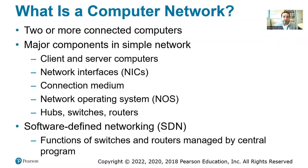The major components of a simple network include client-server computers, which we discussed in previous lectures. A client here refers to a computer — it can be a desktop or laptop — that is connected to a server. It can be one client or multiple clients. An example is a POS or point-of-sale desktop computer connected to a server stored in the back of a small office or building. Another component is the network interface, which you should call NICs. This can be the slot where an ethernet cable is inserted into a desktop, laptop, or any device.